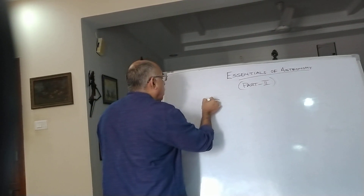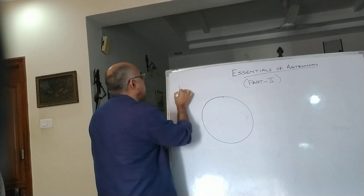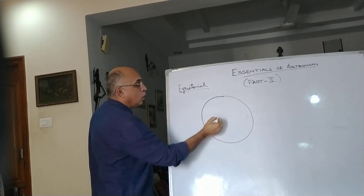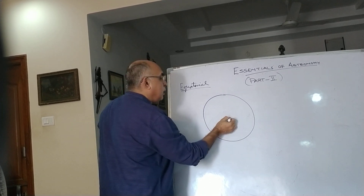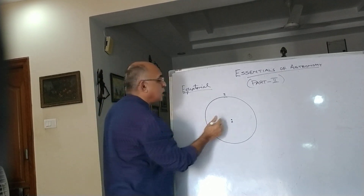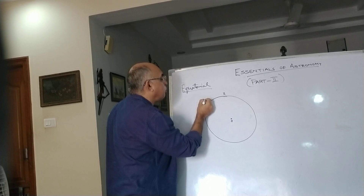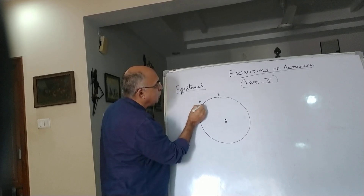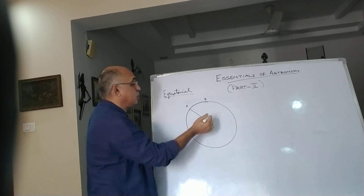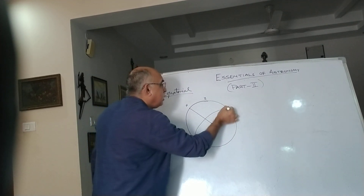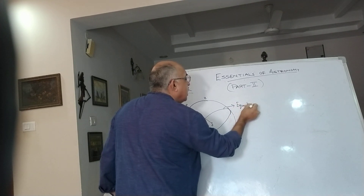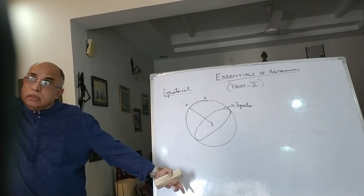Instead, what we use is the equatorial coordinate system. Again I am drawing this celestial sphere with the observer sitting right at the centre. The point above is again the zenith. But rather than taking OZ as the reference line, I look at the pole star Polaris and draw a plane perpendicular to OP. The great circle I get is called the celestial equator — this is Earth's equator extended to meet the celestial sphere.